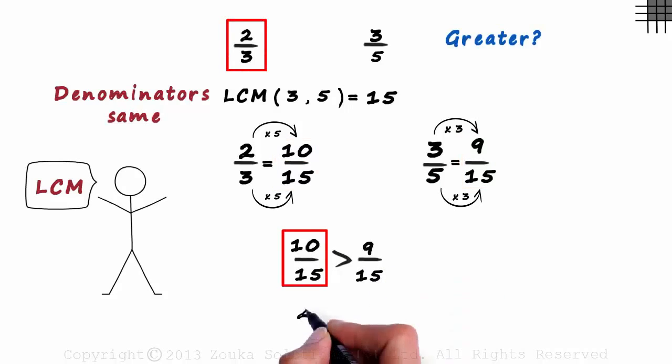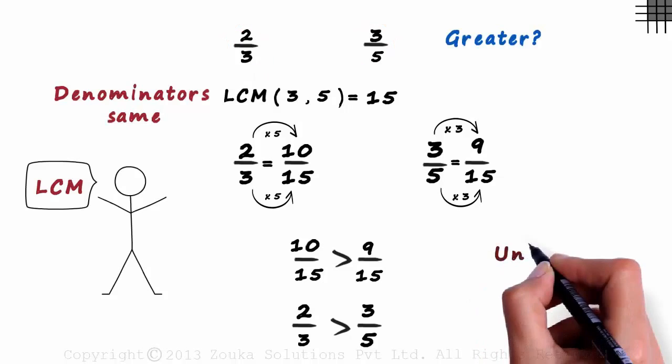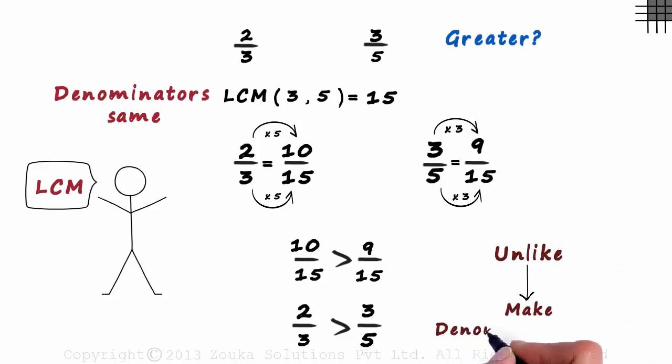10 by 15 is 2 by 3. And 9 by 15 is 3 by 5. Hence, the first ratio is greater than the second one. Remember, when the fractions are unlike, make the denominators same.